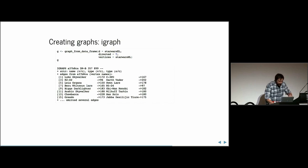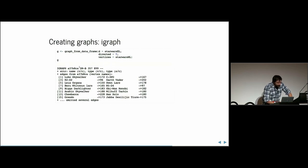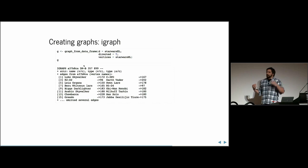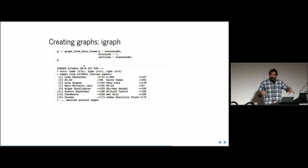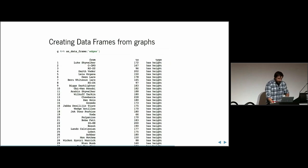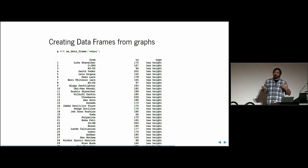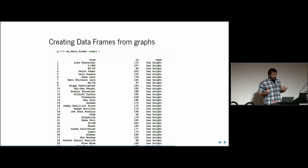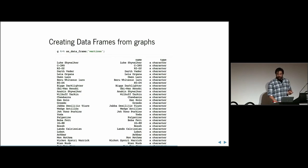Once we have an edge list and a node list, we create a graph using igraph's `graph_from_data_frame` function. We make a directed graph — just a heads up, the 'D' means directed, 'U' is undirected, 'N' is named, 'W' would mean weighted edges. Because we have two different kinds of nodes — characters and their attributes — this is a bipartite graph. You can also go from a graph back to a data frame using `as_data_frame`, which gives you either an edge list or a node list depending on what you want.